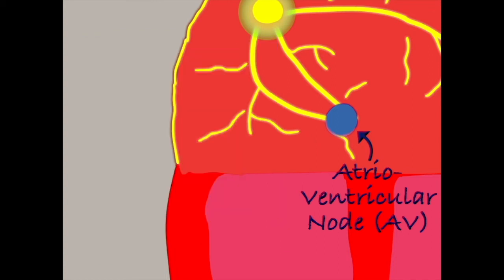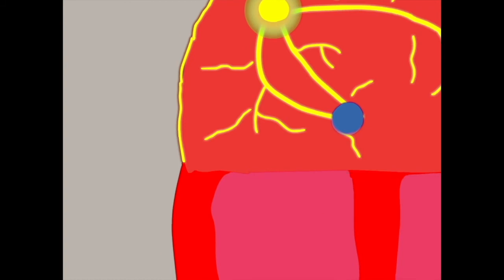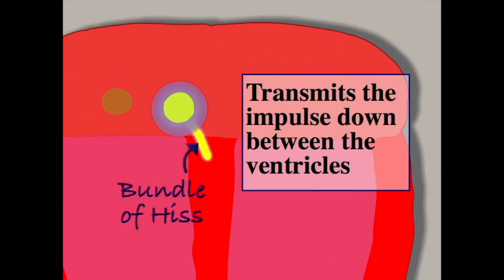The AV node conducts the electricity down to another part of the heart's conduction system, known as the bundle of Hiss, which sits between the two ventricular chambers.